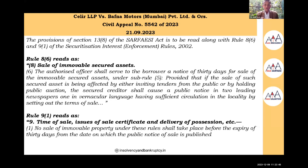Rule 9, Sub-rule 1 states: no sale of immovable property shall take place before the expiry of 30 days from the date on which public notice of sale is published. The 30-day period and the date of public notice — or the date of inviting tenders — are very important reference points.